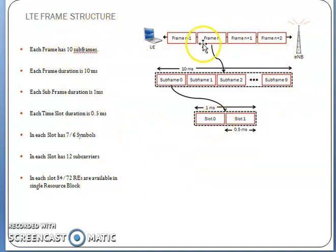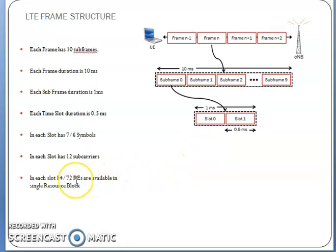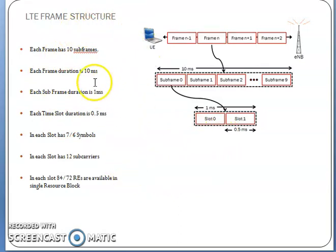This is the LTE frame structure and how it works. 84 resource elements or 72 resource elements make up one resource block (RB). A resource block contains 7 OFDM symbols in the time domain and 12 subcarriers in the frequency domain, equal to one resource block. That is: 12 subcarriers × 7 symbols = 84 resource elements = one resource block.